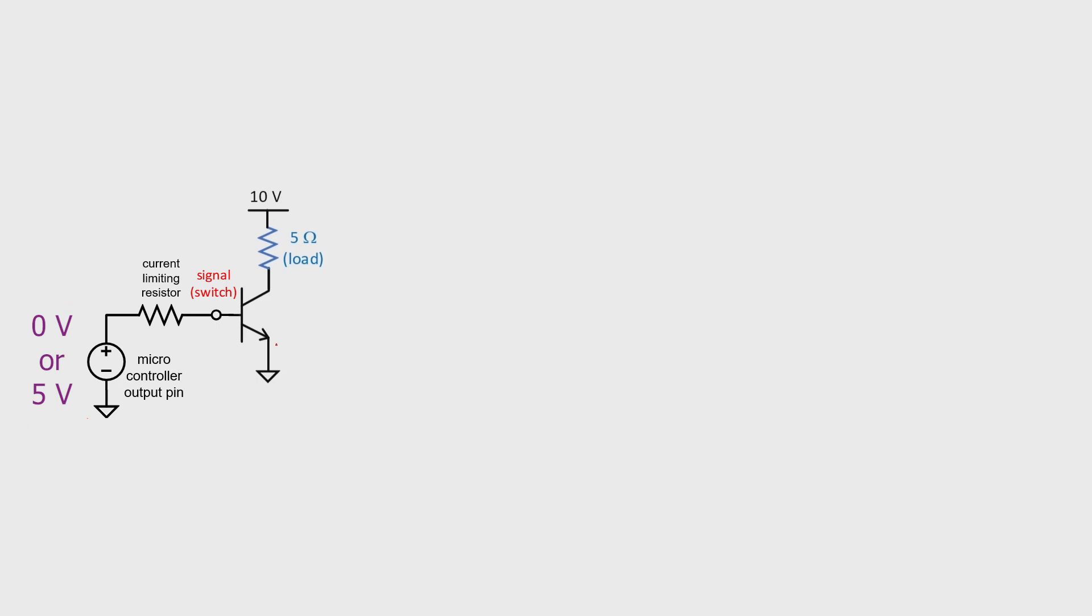I know it's in cutoff because the base emitter junction doesn't have the required 0.7 volts to turn it on. It means in this state the transistor is fully off. If we put 5 volts at the base, the transistor is going to be in saturation, in other words fully on.